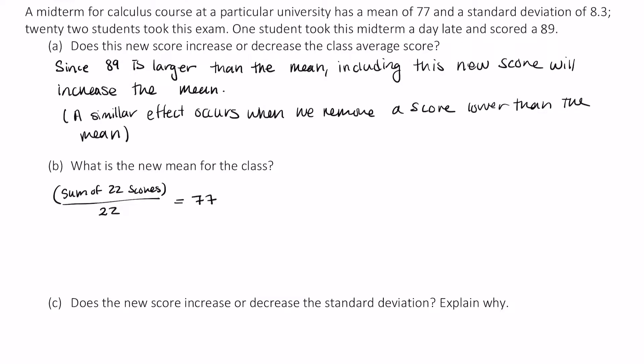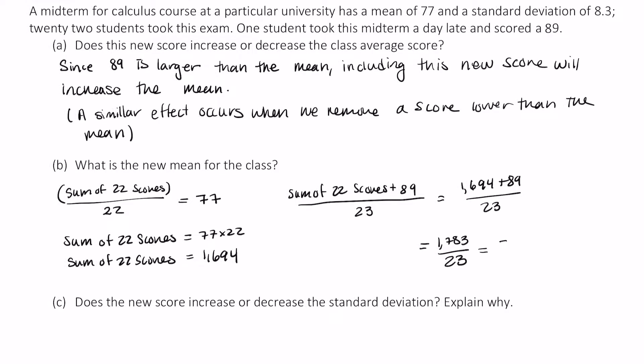So if we multiply 77 and 22, all we have left is the sum of 22 scores. So the sum of the 22 scores is 1694. So to get the new mean, we'd have to sum up the old 22 scores, add in the new score of 89, and now we're going to divide by 23, since we have one more score. So that's 1694 plus 89 divided by 23. That's 1783 divided by 23, and this yields 77.5. So the mean went up by a half here.